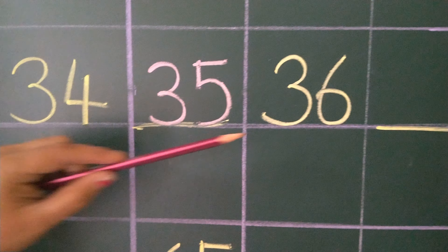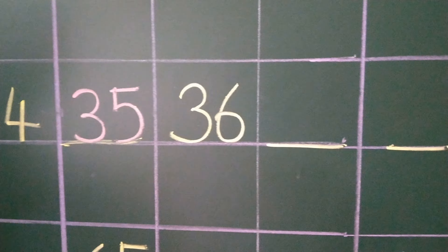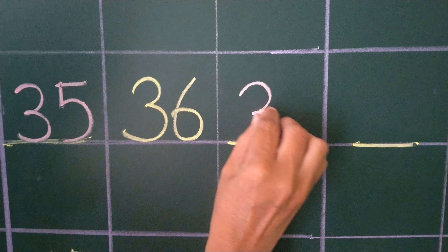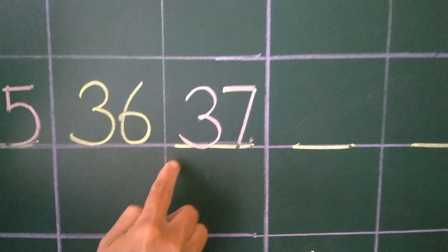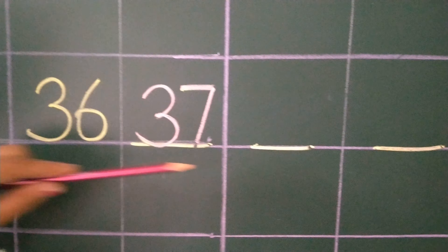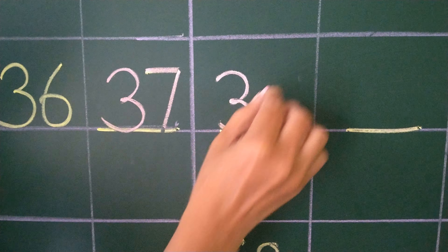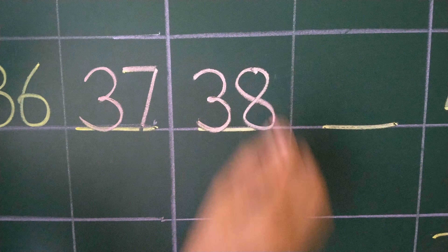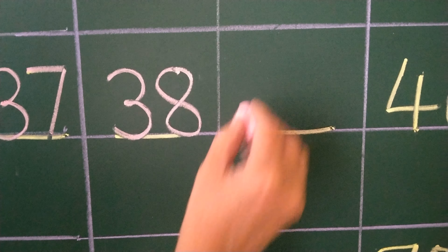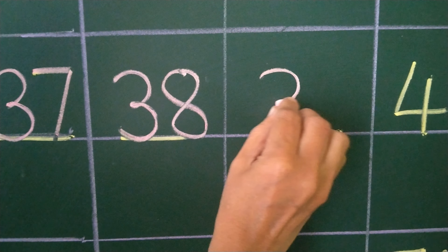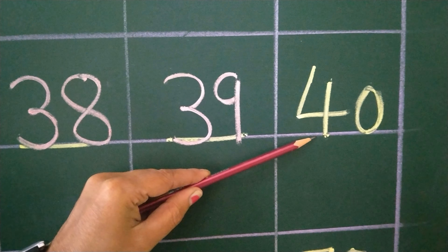The next number is 36. After 36, which number comes? 37. After 37, which number comes? Number 38. Next number is after 38, which number comes? 39. And last number is 40.